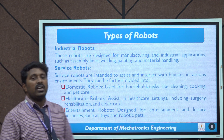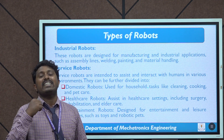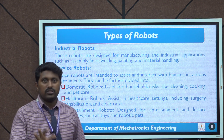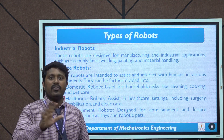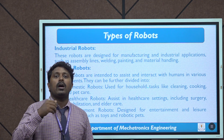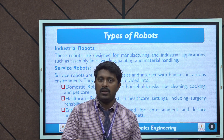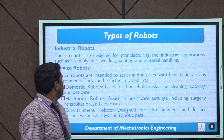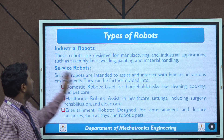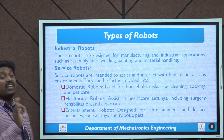Next are the different types of robots. Robots are classified into different types based on different categories. First are industrial robots, mainly used in industry for manufacturing and applications like grinding, painting, welding, drilling, assembly, and inspection. These robots are designed for assembly lines, welding, painting, and material handling. Next are service robots, used to assist human beings in various conditions.